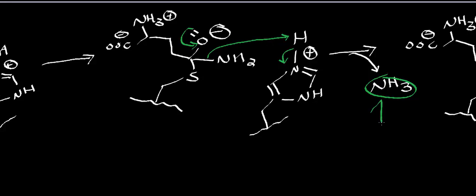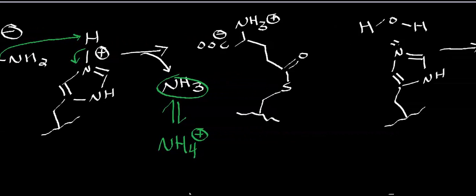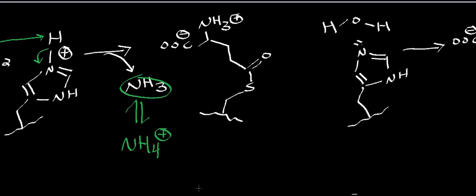The ammonia, when it leaves the active site, will do a proton exchange with solution to generate ammonium, the version of ammonia that we see at physiological pH. But now here's the problem. You now have a thioester linkage between the cysteine residue of the active site of glutaminase and glutamate, and you somehow have to hydrolyze that.